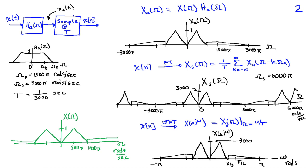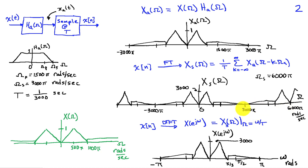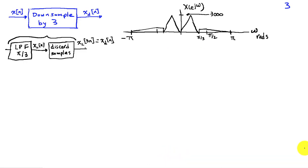Once we have the Fourier transform for the sampled signal, we can convert it to the discrete-time Fourier transform X(e^{jω}) by taking x_s(Ω) and replacing uppercase Ω with lowercase ω divided by T, the sampling frequency. This always maps ω_s to 2π, which maps the Nyquist frequency — in this case 3000π — down to π in terms of lowercase ω. So we have one period of X(e^{jω}) with amplitude 3000, spanning from −π to π.